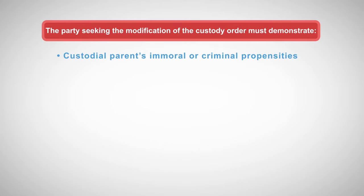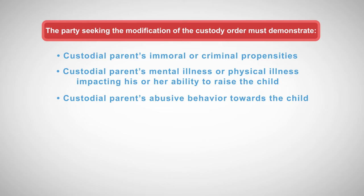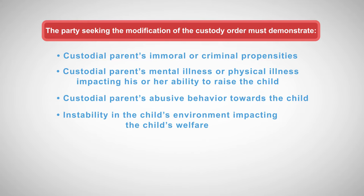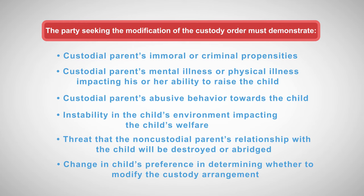The party seeking modification of the custody order must demonstrate some of the following elements to prove a material or substantial change in circumstances: the custodial parent's immoral or criminal propensities; the custodial parent's mental or physical illness impacting his or her ability to raise the child; the custodial parent's abusive behavior towards the child; instability in the child's environment impacting the child's welfare; a threat that the non-custodial parent's relationship with the child will be destroyed or abridged; or a change in the child's preference. If the parent seeking modification can show that a number of these elements exist, it is more likely that a court will modify the custody order.